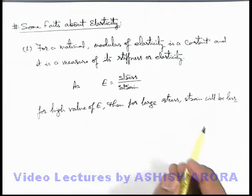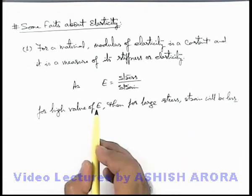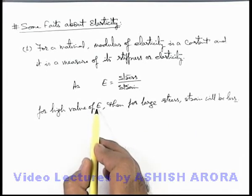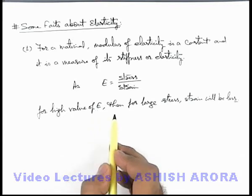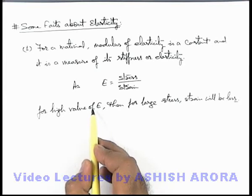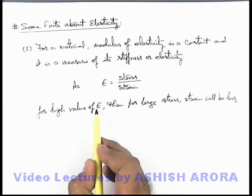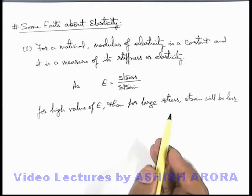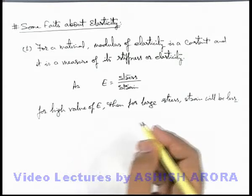If there are two materials having one higher value of modulus of elasticity and other lower value of modulus of elasticity, are subjected to equal stress, then the one which is having lower modulus of elasticity will be having more strain. Or you just compare it with an example of springs.